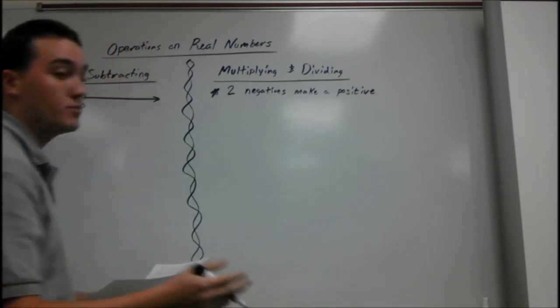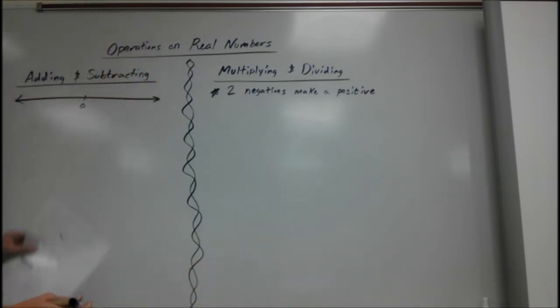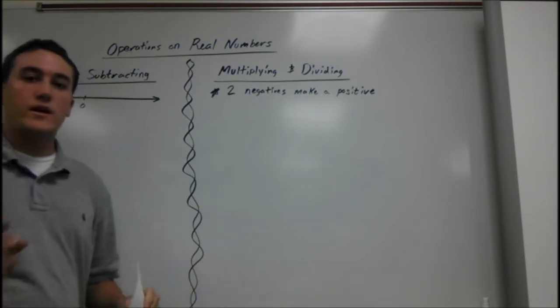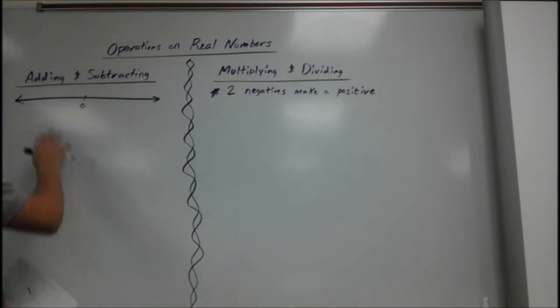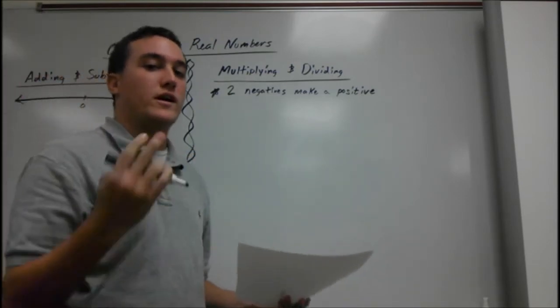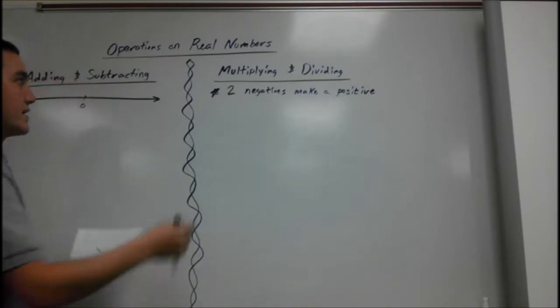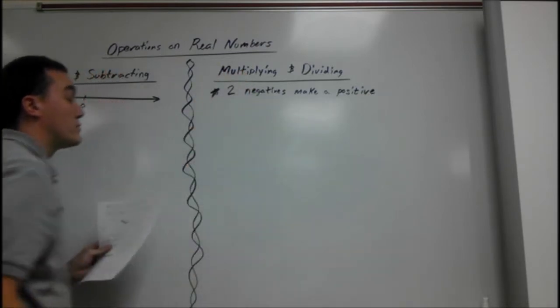Rules are a little different when it comes to both of them. When you're adding and subtracting, the best thing to do is think about a real number line. When you're multiplying and dividing, our rule is two negatives make a positive. That's always the case when you're multiplying and dividing real numbers.